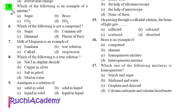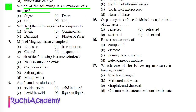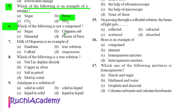Question 5: Which of the following is an example of a mixture? A) Sugar, B) Brass, C) Carbon dioxide, D) Nitrogen dioxide. Correct answer is Brass, because brass is a mixture of copper and zinc.